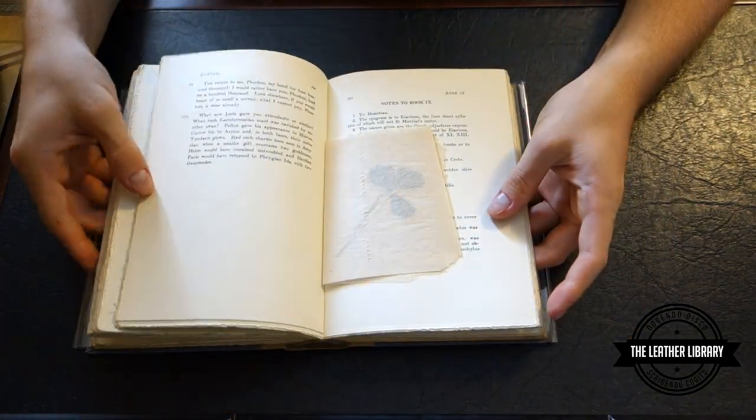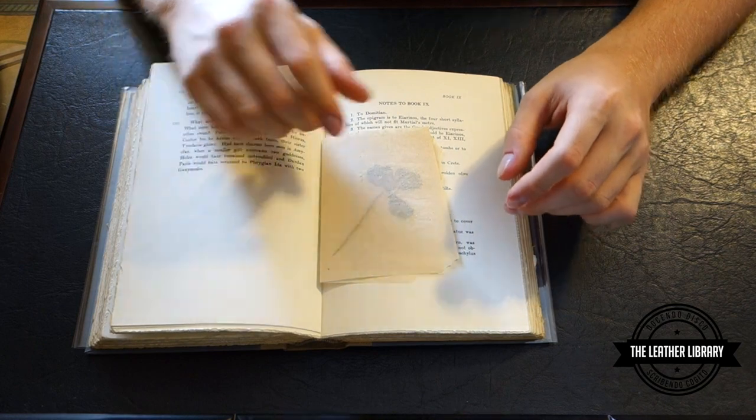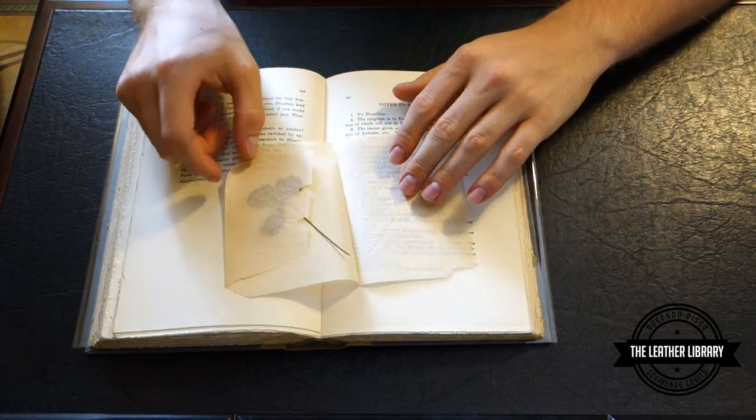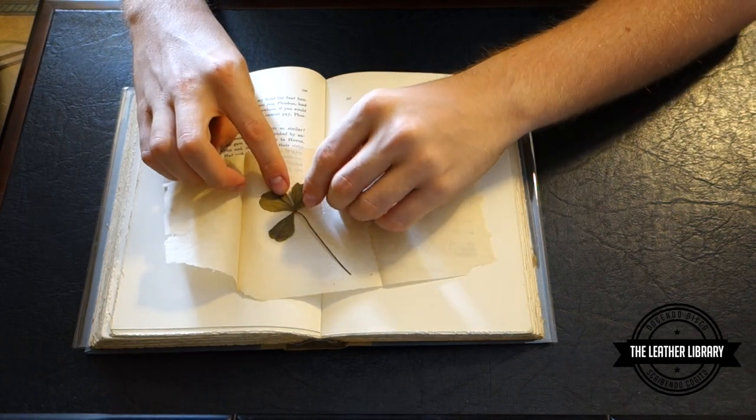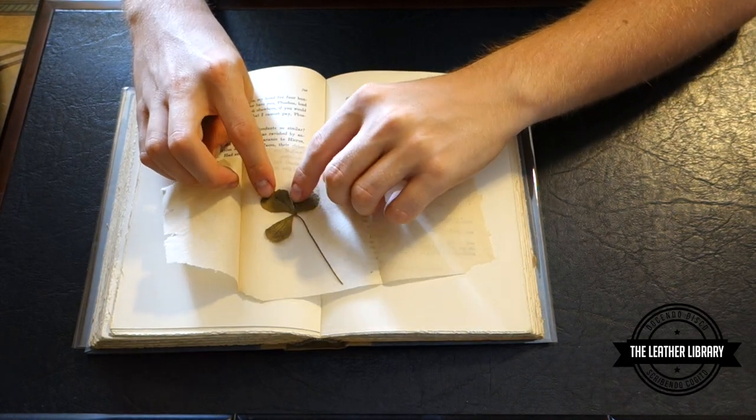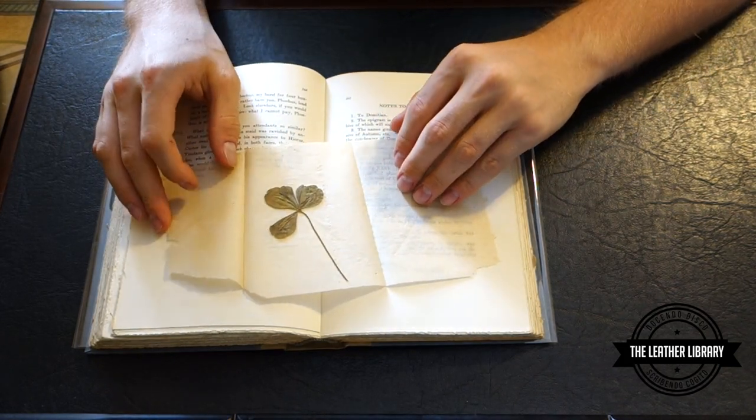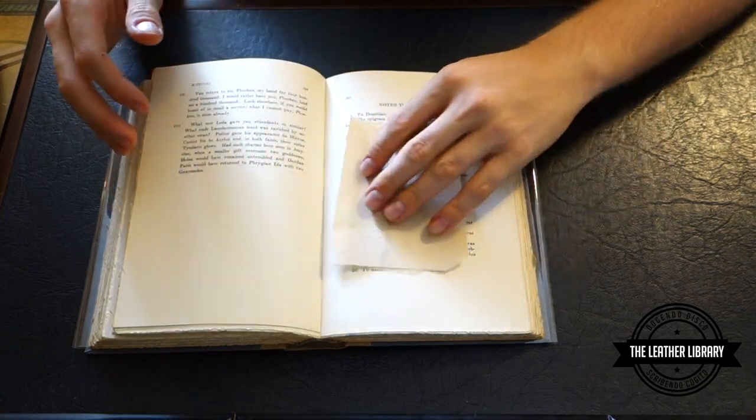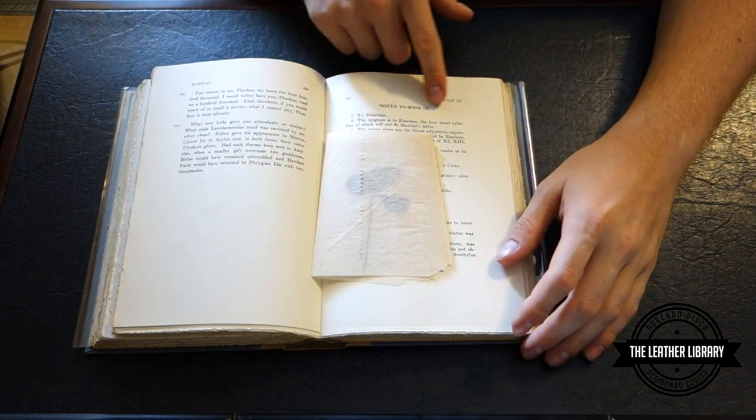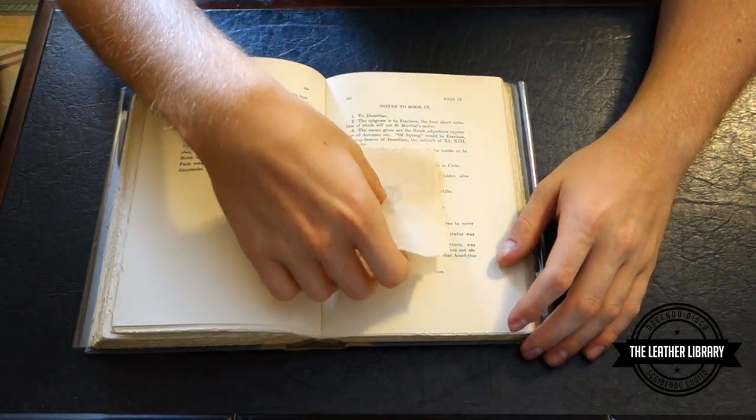Now I'll show you something that I found was interesting. This must have been from one of the previous owners. Somebody pressed a clover in here. Now I don't know if this is, yeah it's a four-leaf clover that was pressed in this piece of paper here within the book itself. And this particular part that it's pressed into is the notes to Book Nine.